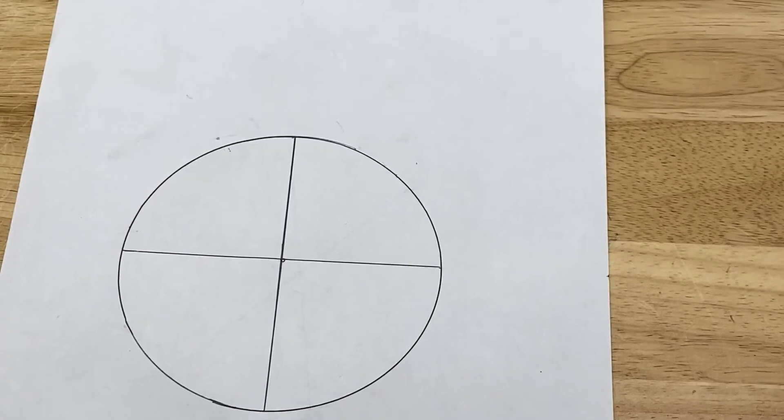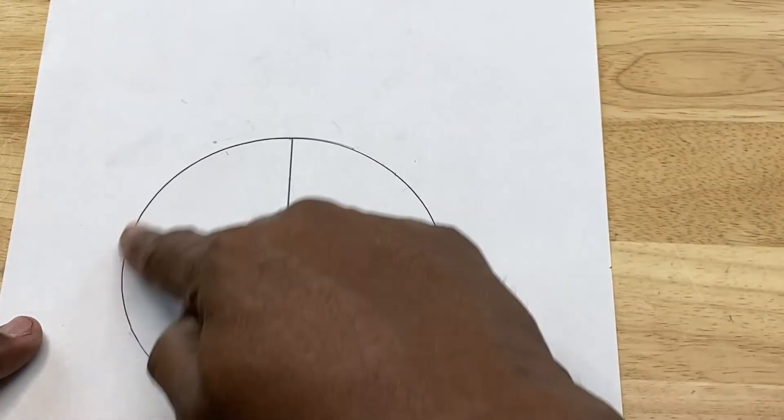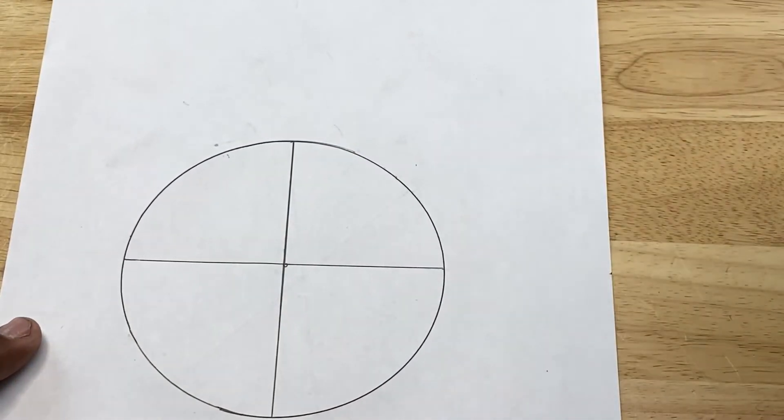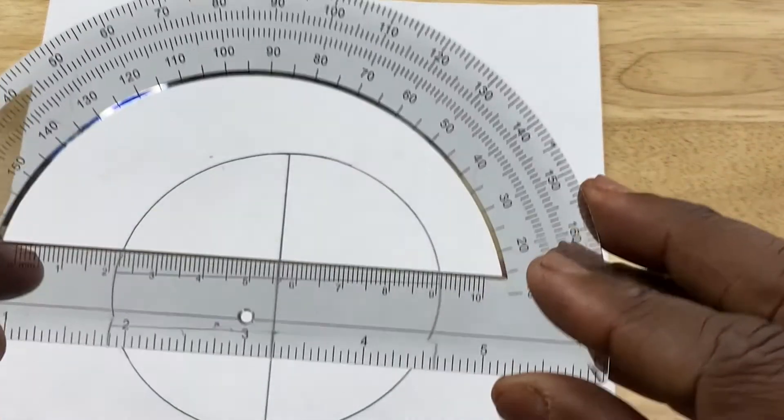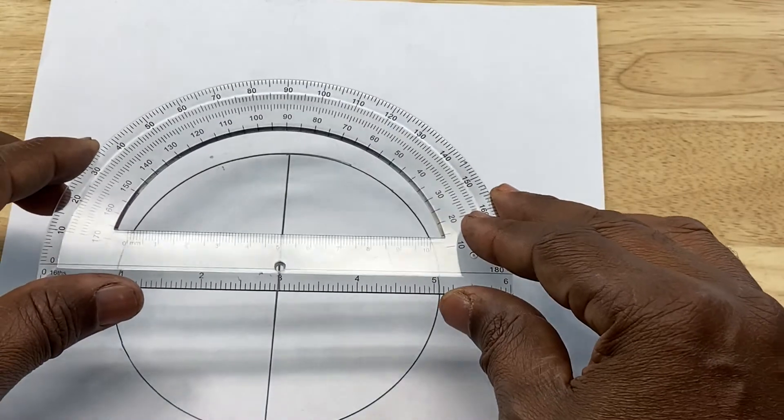Okay, so we said we want our nozzle or our pipe to be inserted into our bigger pipe represented by this circle here at a 45 degree angle. So what we're going to do is we're going to take our trusty protractor again and center it on the circle.